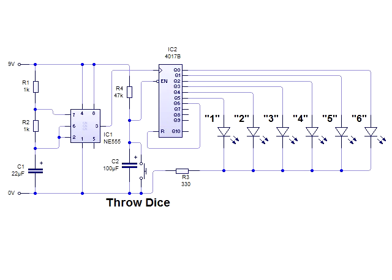Here we have a decade chaser that is connected to a 555 astable circuit. It runs as long as the voltage on the enable input of the 4017 is below a certain amount.